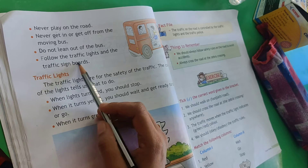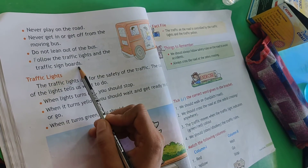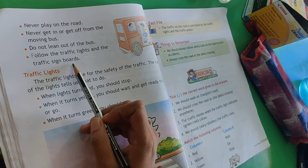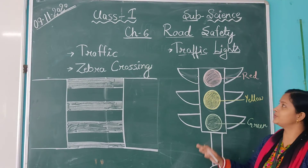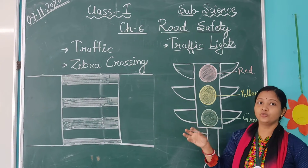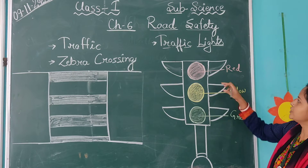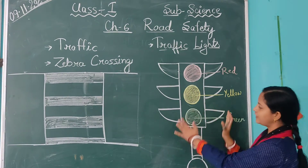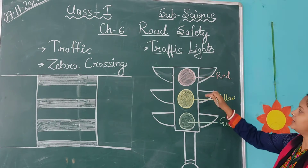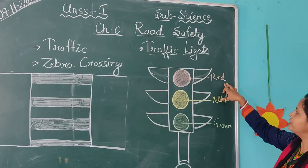Next one is: follow the traffic lights and the traffic sign board. We should follow traffic lights and the traffic board. Here you can see the traffic light diagram. There are three signs: red, yellow, and green.